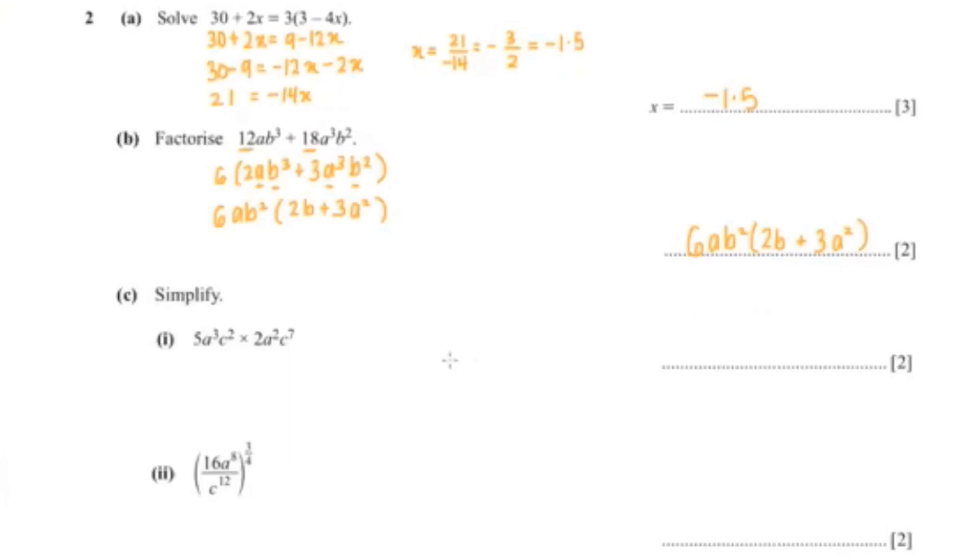Moving on to the next question, I want us to simplify. 5 multiplied with 2 is 10. A cubed multiplied with a squared is a to the power 5, and all you do is add the powers together.